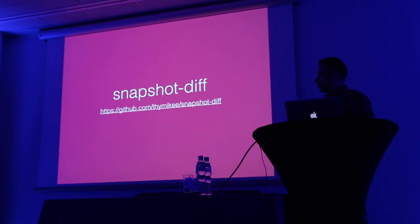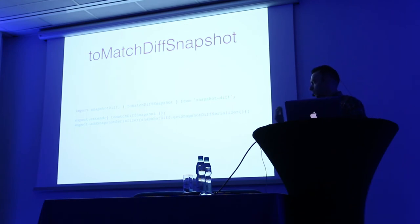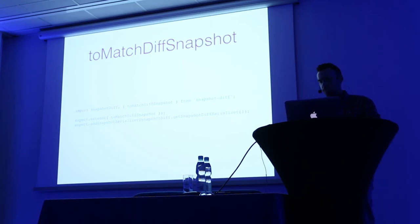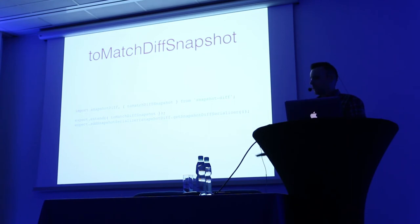He joined my company recently, and in the first day I was talking to him - he's a Jest contributor. I was talking to him and said, look, we have this problem. I always thought we should be able to compare those snapshots and read something smaller for different states. So we were talking about this one afternoon - I was talking, he was writing - and he got this library done in one day. I'm going to show you how this works. In Jest you know we have expect. You can extend expect and you can add your own matchers to Jest. You can also add your own serialization.